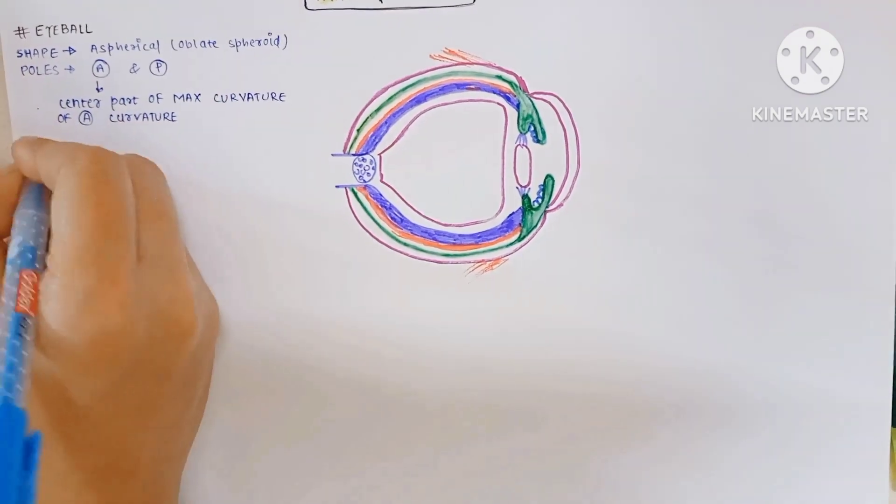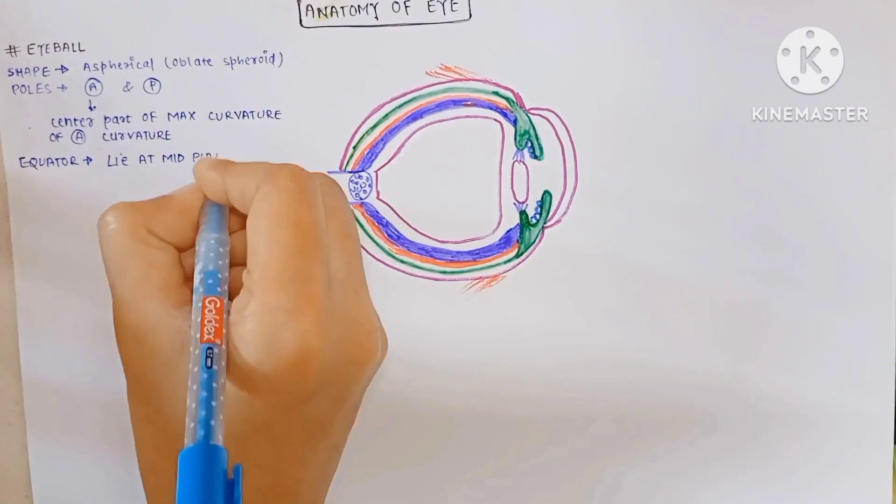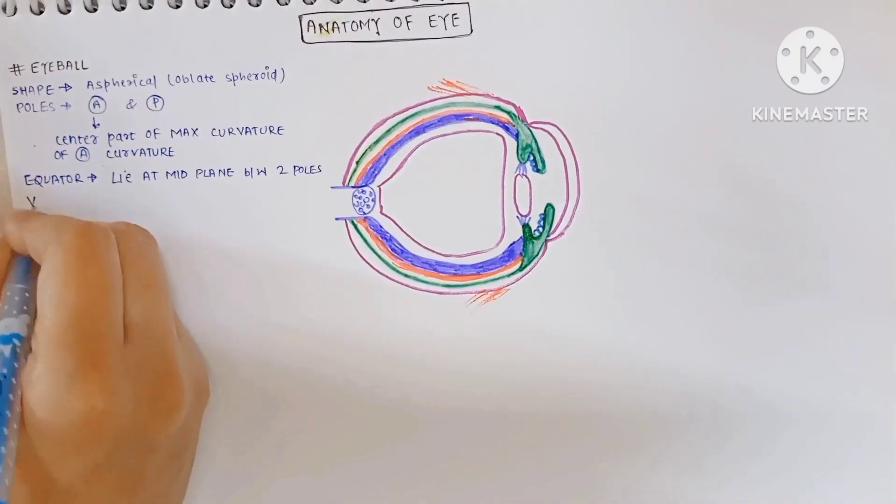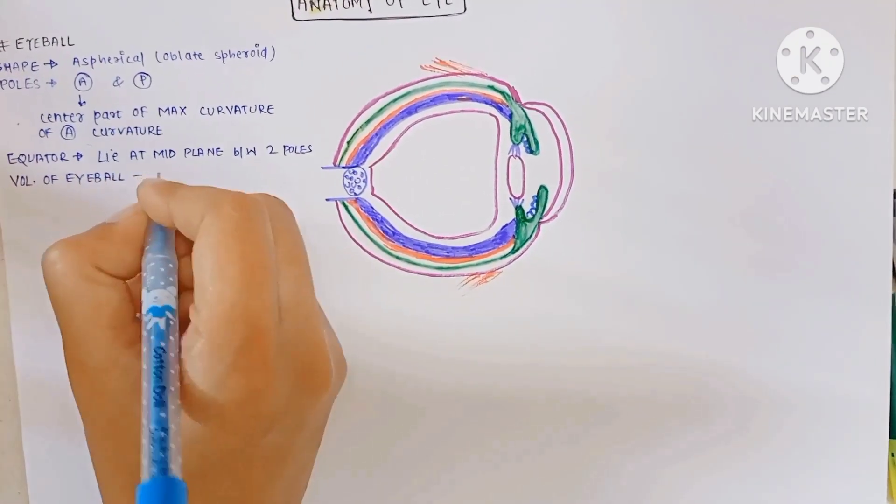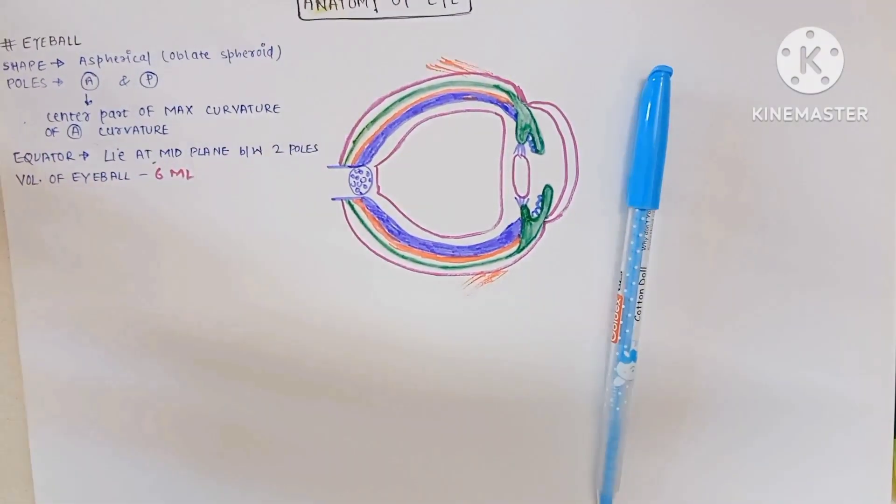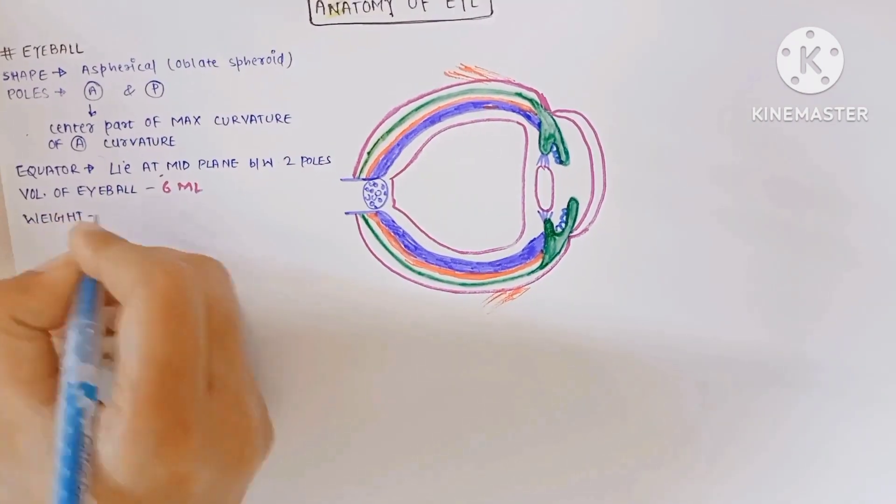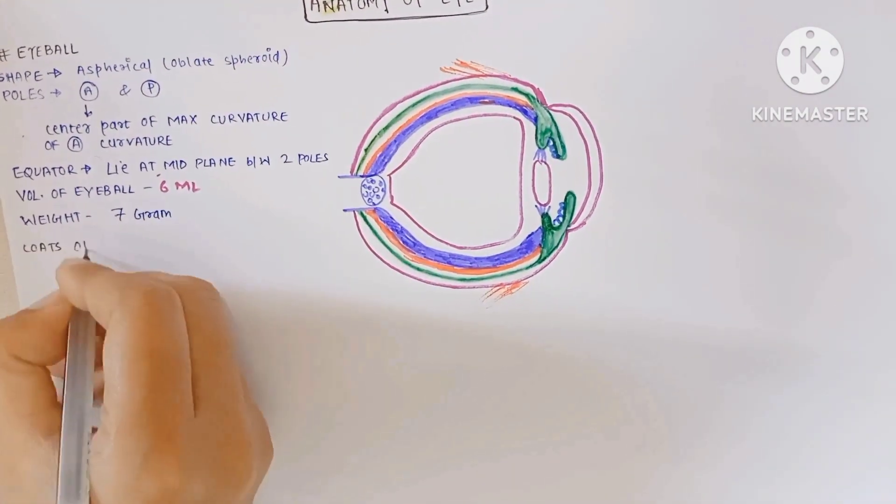The equator of the eyeball lies at the midplane between the two poles. The volume of the eyeball is about 6 ml. The weight of the eyeball is about 7 grams. There are three coats of the eyeball.